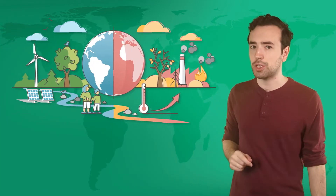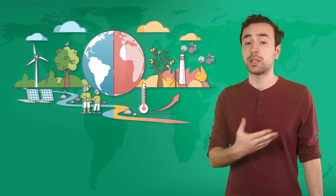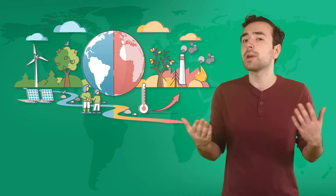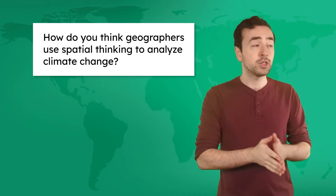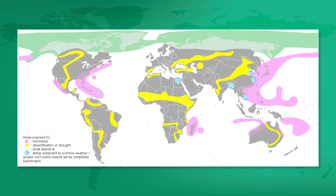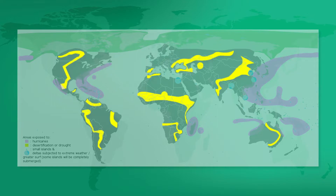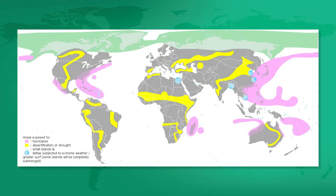We can practice using spatial thinking by analyzing a global issue that we've recently discussed — climate change. How do you think geographers use spatial thinking to analyze climate change? Geographers use spatial thinking to map the spatial distribution of the impacts of climate change. For instance, this map shows parts of the world that are experiencing increased hurricanes, droughts, and other extreme weather events as a result of climate change.